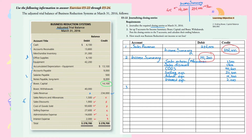In the first entry I credited Income Summary with $234,000, and in the second entry I debited it with total expenses and contra-revenues of $141,200. The balance is $92,800 on the credit side, meaning revenues exceeded expenses — this is net income. To close it, I debit Income Summary and credit Capital for $92,800.